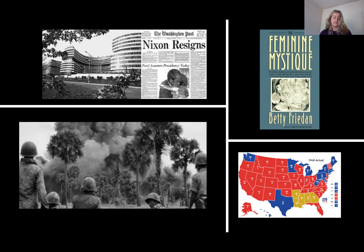The Watergate scandal. On June 17, 1972, a group of burglars were arrested while attempting to break into the National Democratic Headquarters at the Watergate Hotel in Washington, D.C. After they were arrested, it was revealed that one of the burglars, James McCord, was a member of CREEP — the Committee to Re-Elect the President. Once the press became aware of this, two reporters from the Washington Post, Carl Bernstein and Bob Woodward, became convinced that there was a direct connection between the burglary and Richard Nixon.